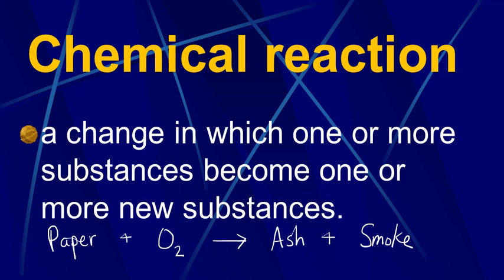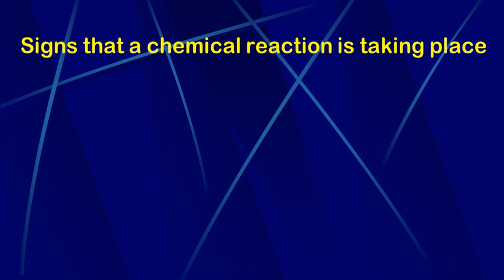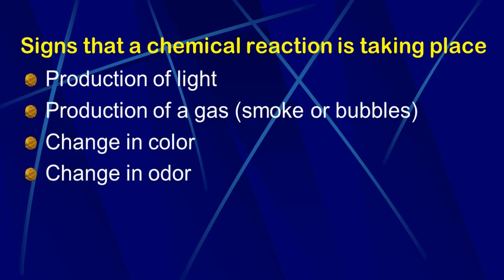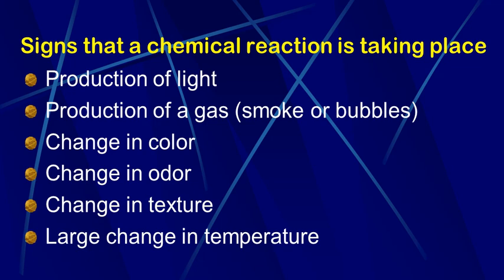When we said that there are some signs that a chemical reaction is taking place, there are at least six things that you can look for. Not all six of these will appear in every reaction, but we can expect to see several of them. When we burn the paper, we saw light given off in the form of a flame—that's a common sign of a reaction.